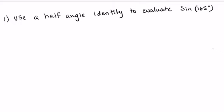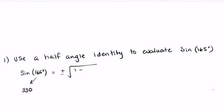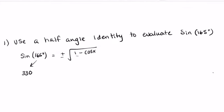We want to use a half angle identity to evaluate the sine of 165 degrees. So if we have the sine of 165 degrees, notice that is x divided by 2. So I'm going to be multiplying 165 by 2, and that gives me 330 degrees, and that's what I'm going to be utilizing within my formula. We have plus or minus the square root of 1 minus cosine of x divided by 2.